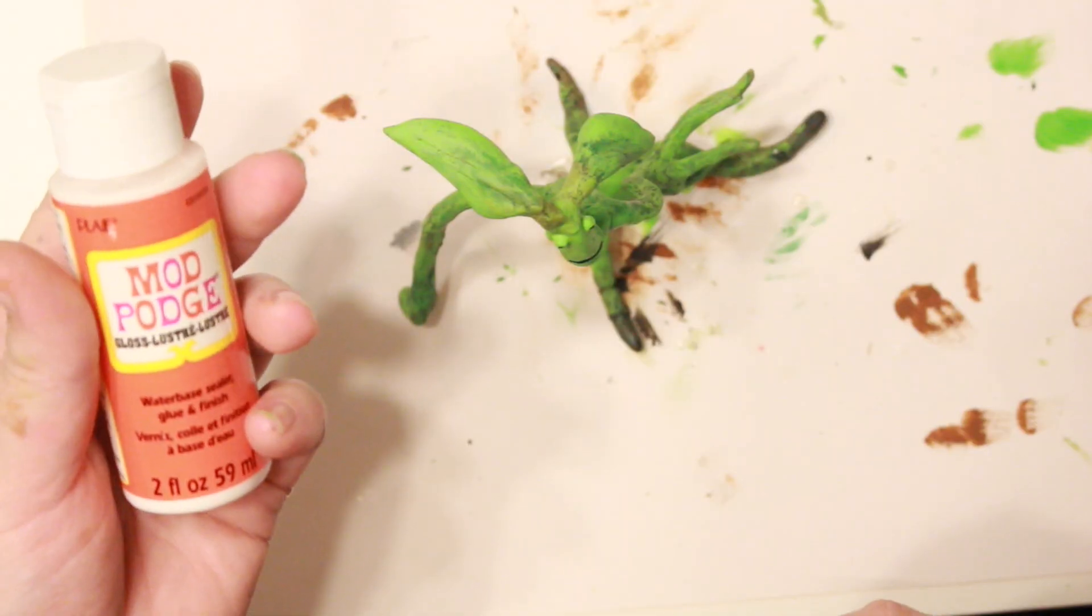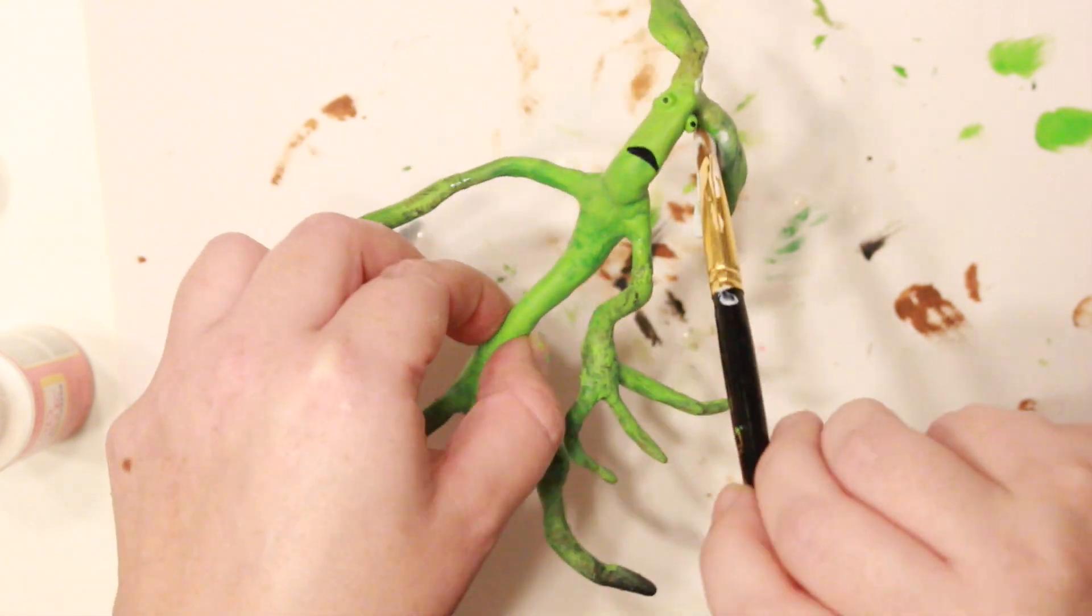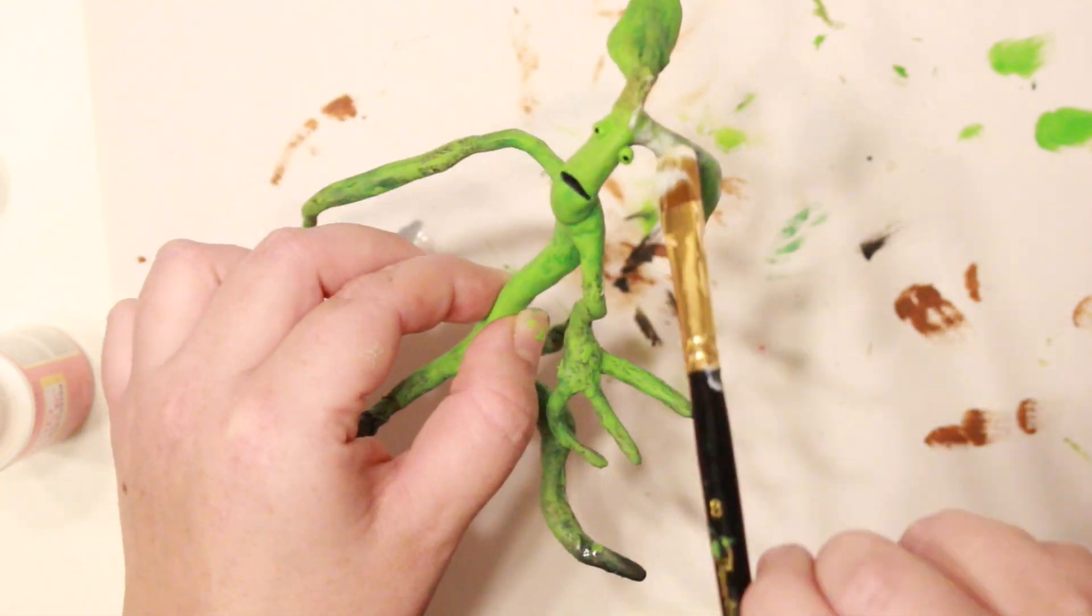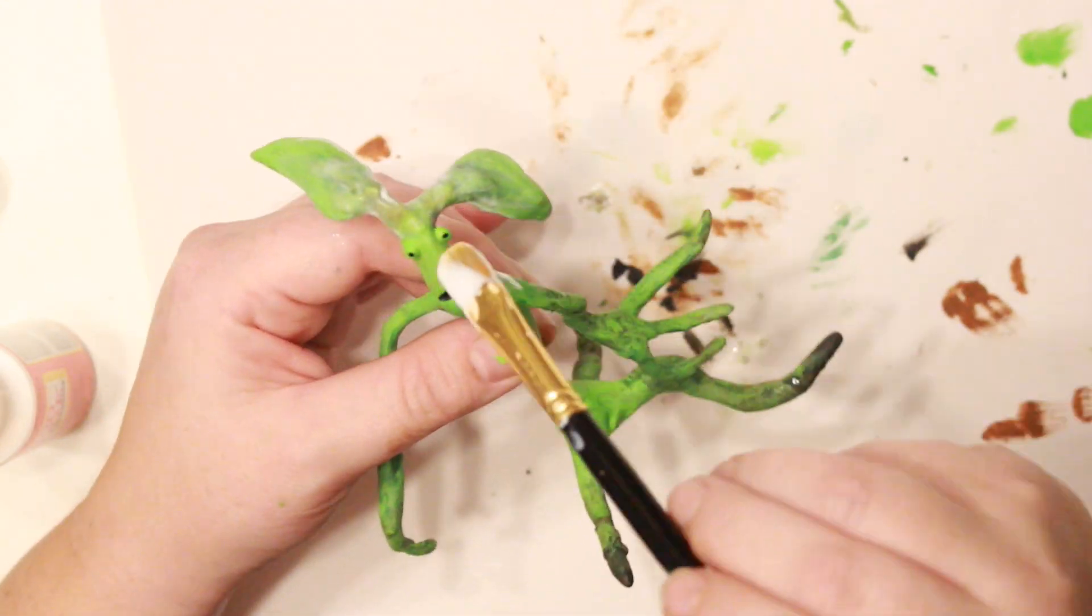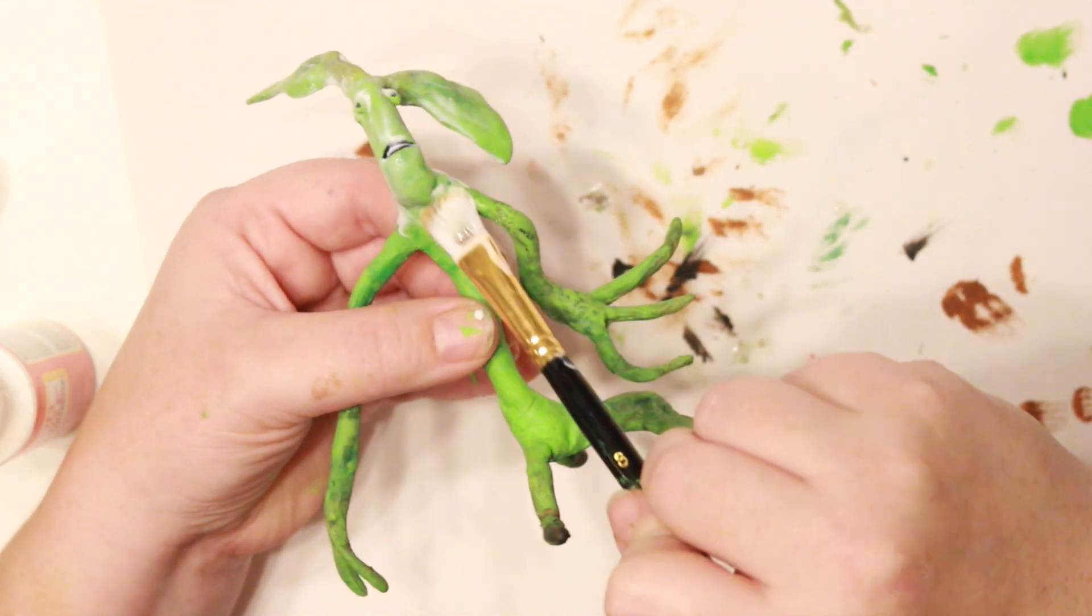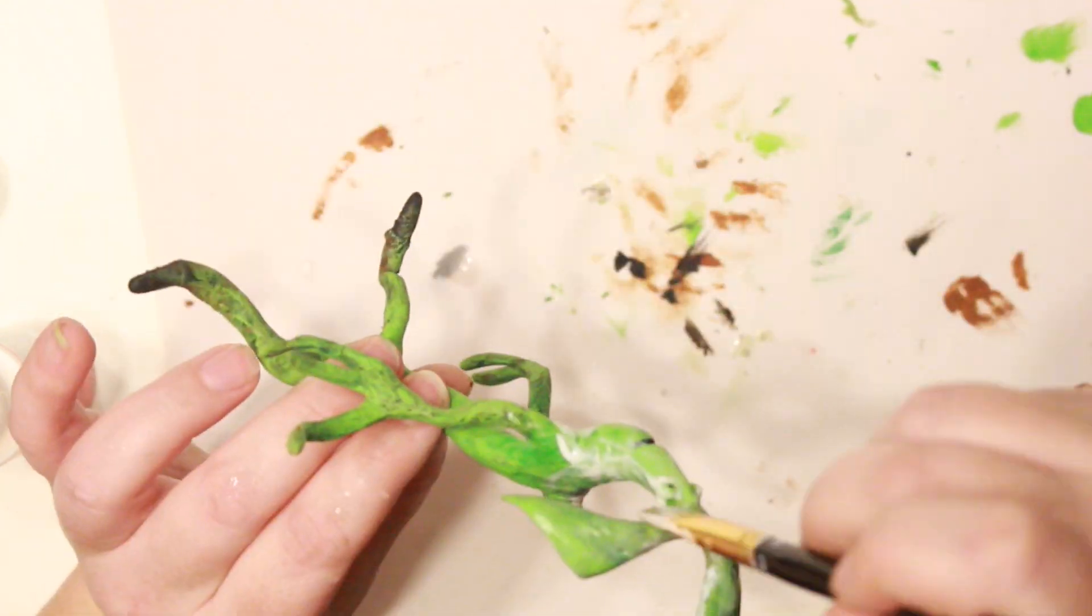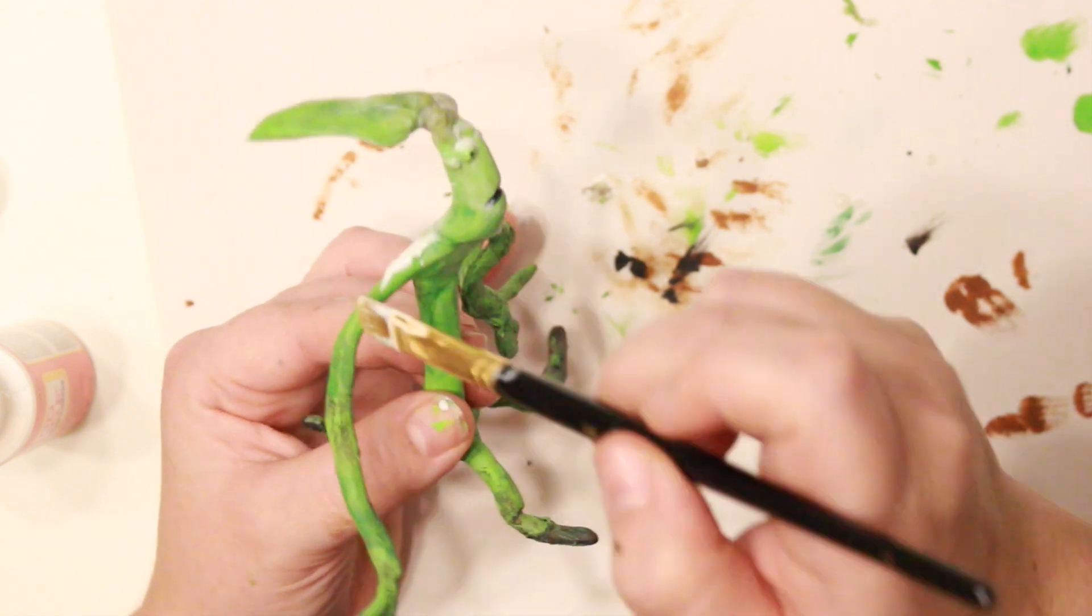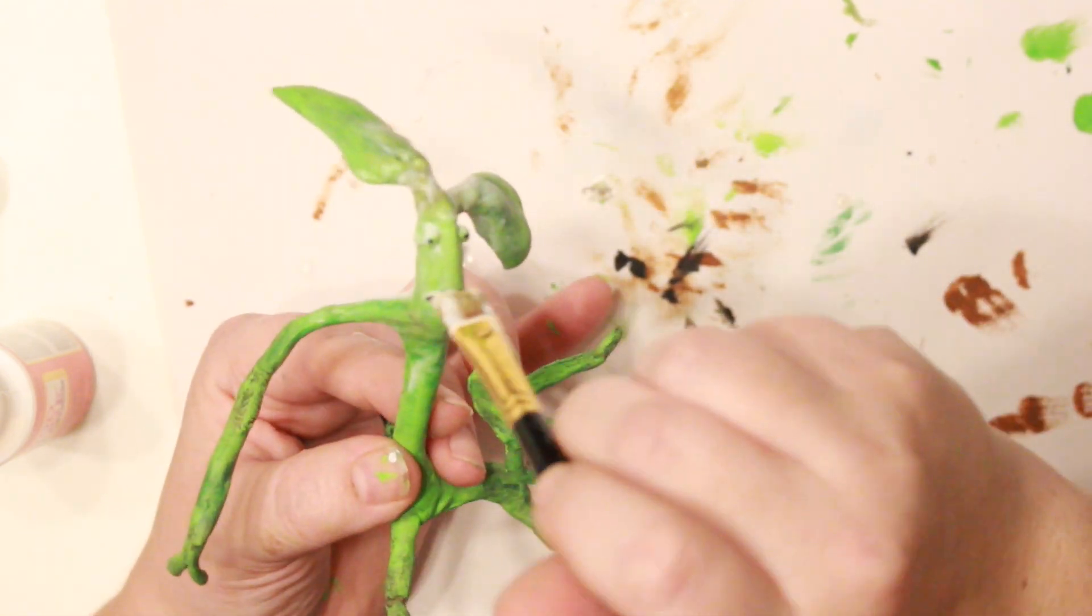So that's what he looks like painted, and now I'm going to go in with the Mod Podge, the shiny gloss Mod Podge. This not only seals your paint, but it's also going to give him just a little extra dimension. Since he's a plant, it kind of brings him to life. It makes him look more plant-like, so I really thought that this was an excellent step. I think I did two coats of Mod Podge, and here is the final look.